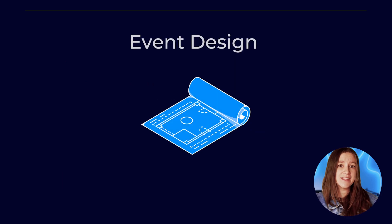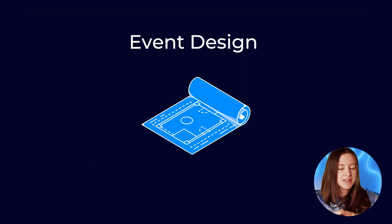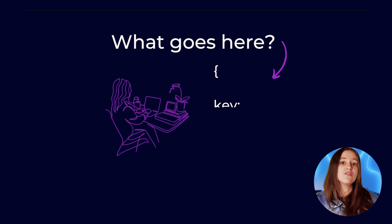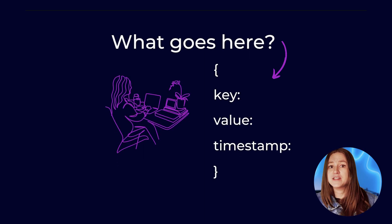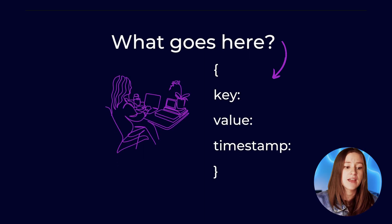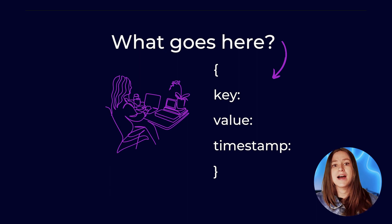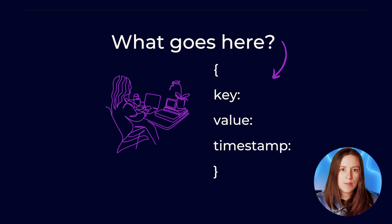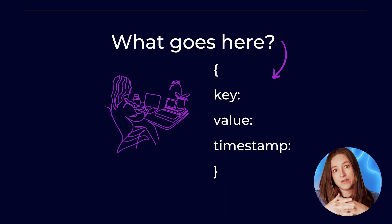So our first term here is event design. Event design is all about answering the question: what values go here? And that's affected by things like whether you want your events to be read by external versus internal systems, or how tightly coupled you want the relationship between parts of your structure to be.